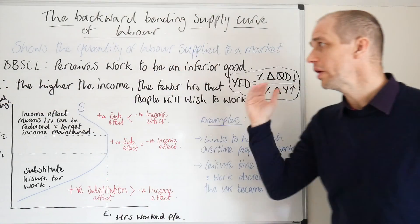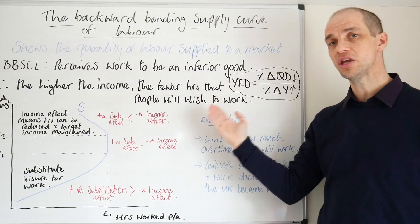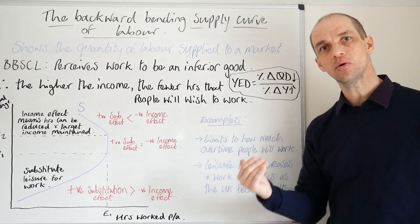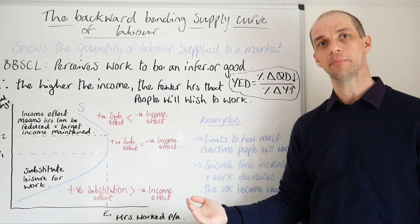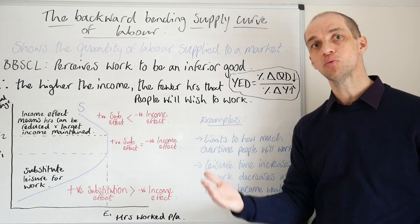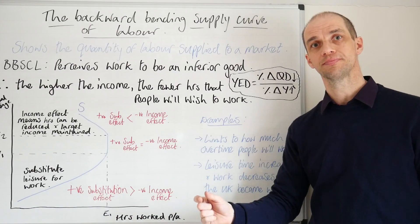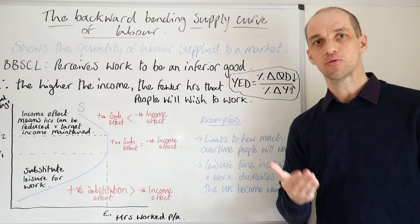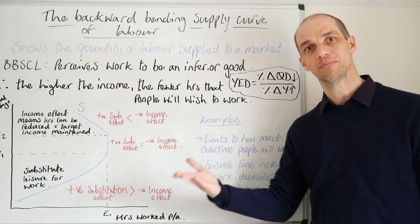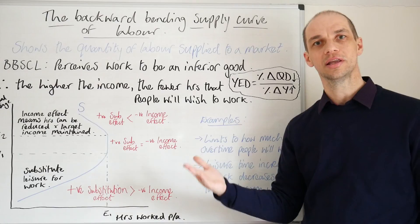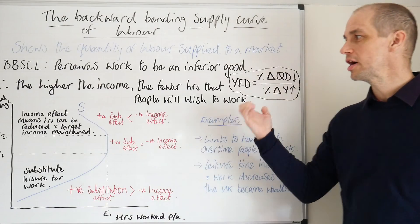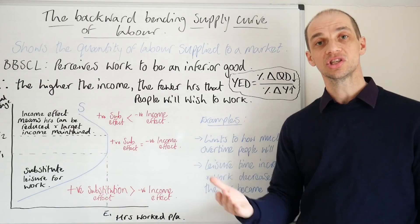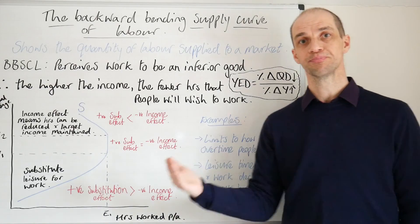Therefore, the higher the income, the fewer hours that people will wish to work. When you are making higher levels of income, generally people will want to actually work fewer hours. A good example of this perhaps is Richard Branson, who now runs his Virgin Empire from Necker Island in the Bahamas. He's opted to take up more leisure time instead of working longer hours.